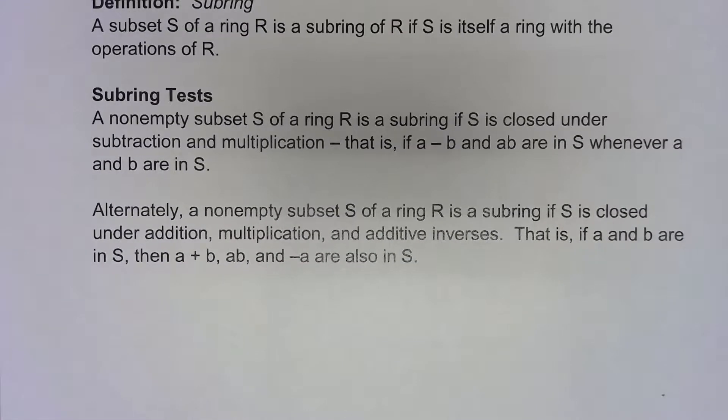So if we can add two things in the subset, it's in the subset. If we multiply two things in the subset, it's in the subset, and everything in the subset has an additive inverse, then it's a subring.